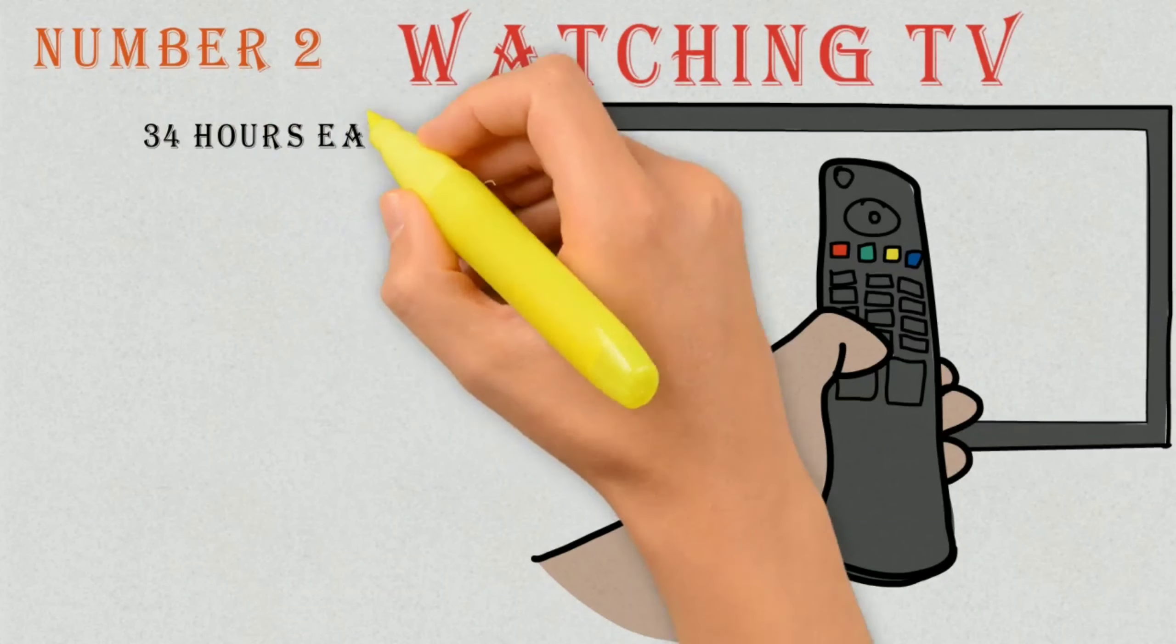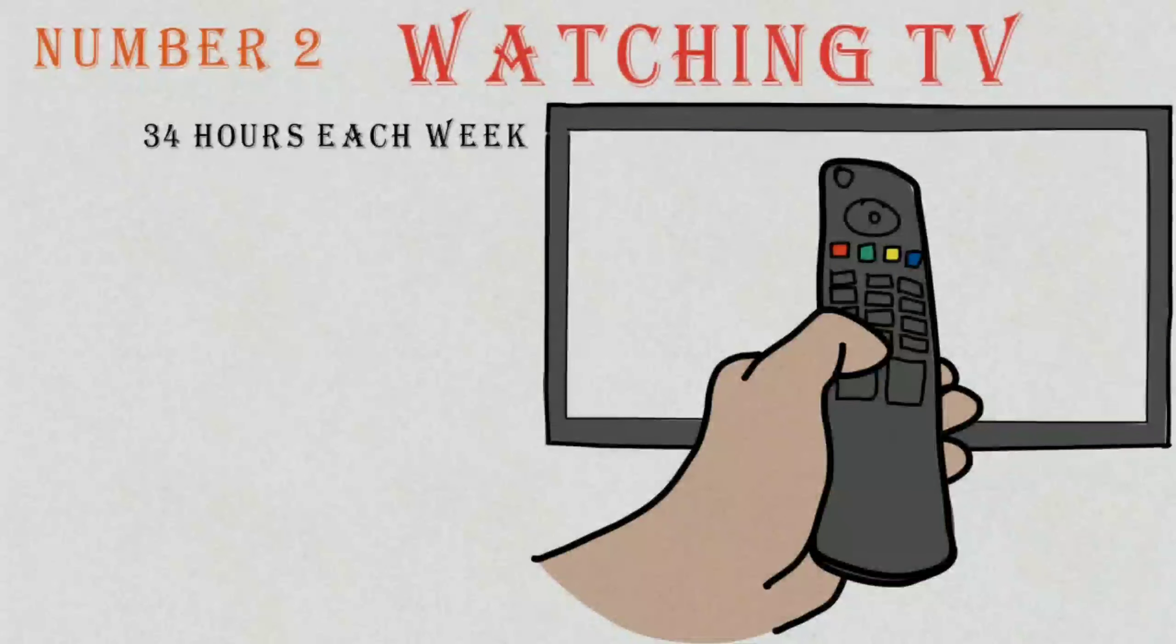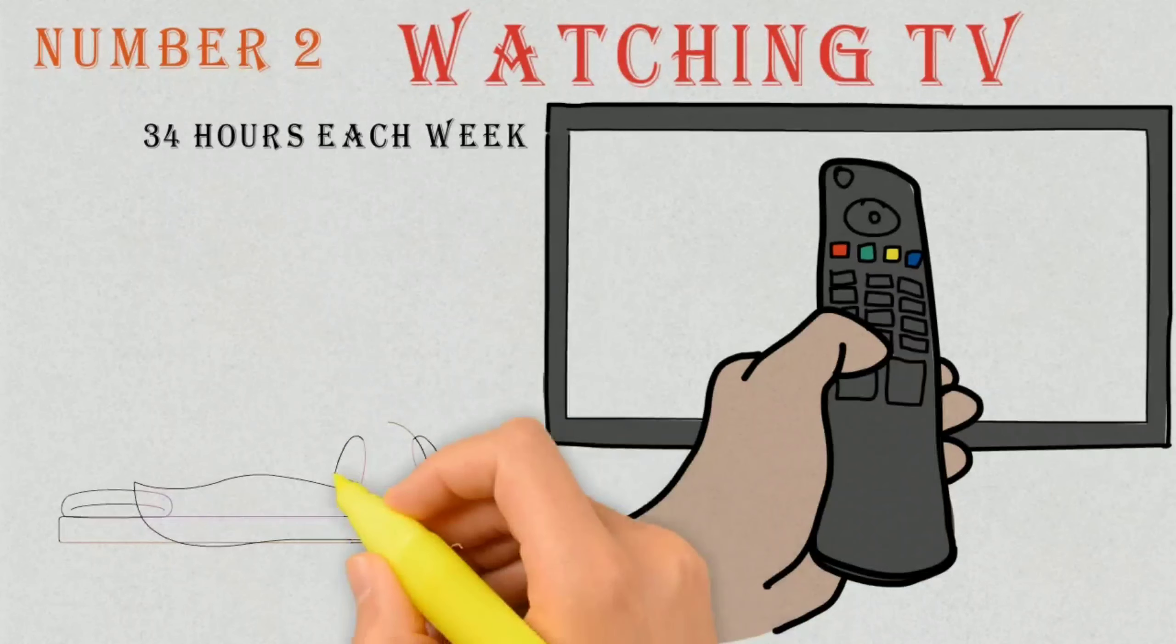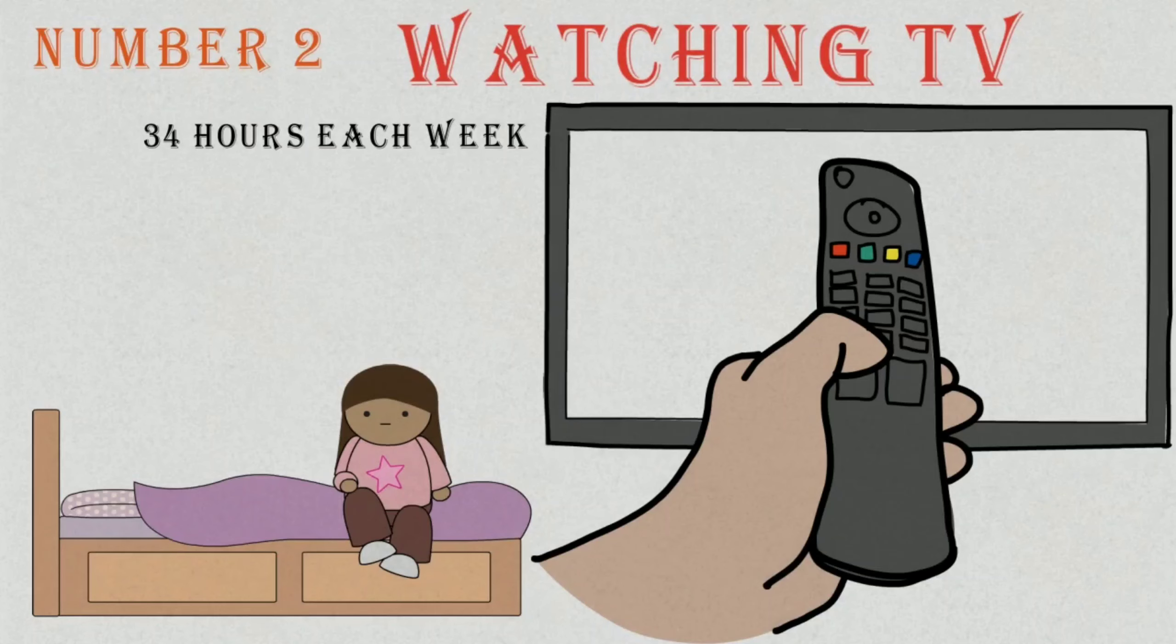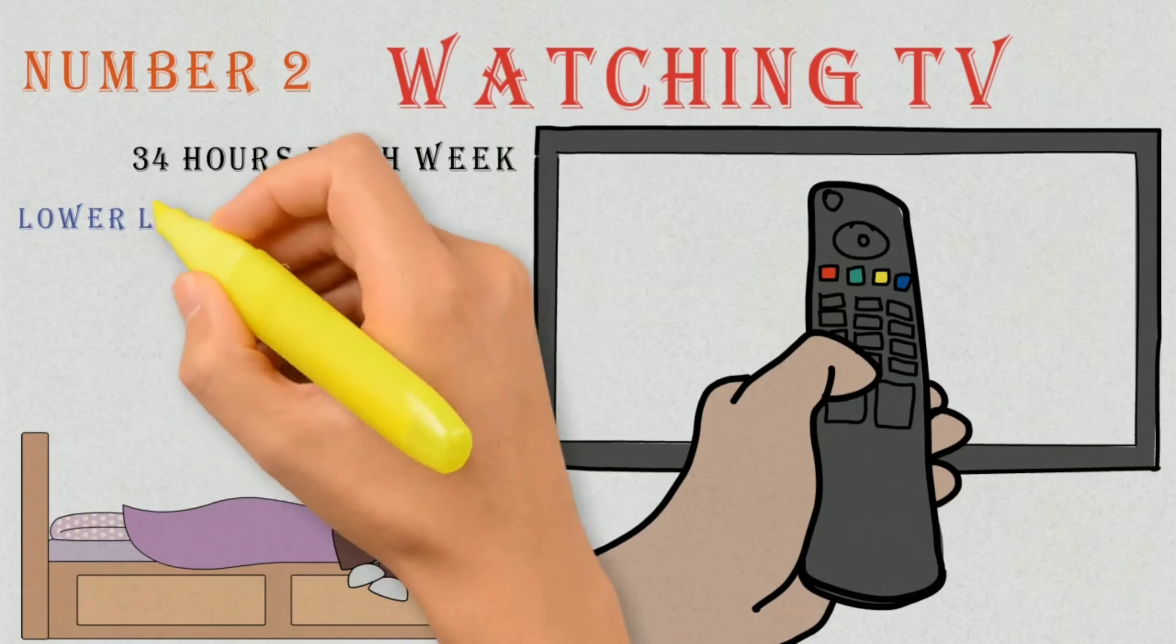While many people will argue that a little bit of TV never hurt anyone, the amount of a little bit is constantly in debate. A Nielsen report found that the average American watches more than 34 hours of television each week. That's almost a full work week. Imagine if you spent a fraction of that time working on your goals. You would be making so much progress.